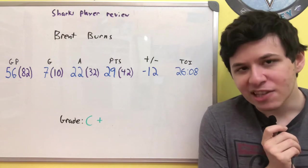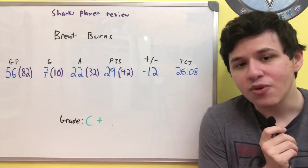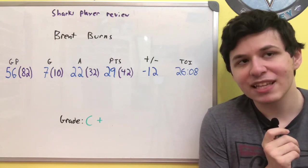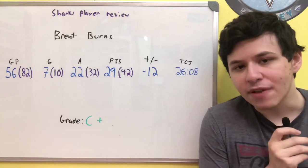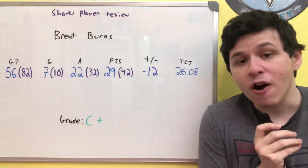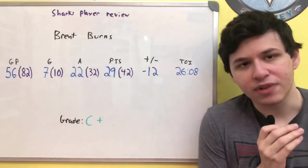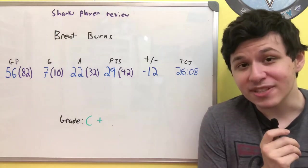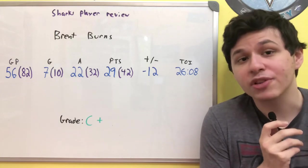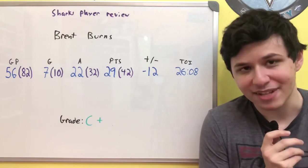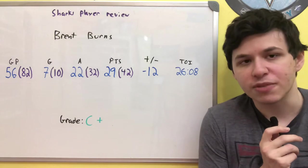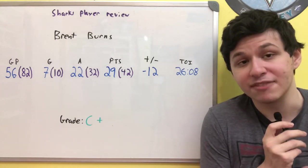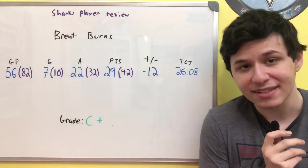So one stat that we can look at is the offensive zone start percentage. Basically, what percentage of the face-offs that you come on the ice for are in the offensive zone compared to the neutral and defensive zones. Now this season for Brent Burns, considering he has now taken on the role as the top not only offensive guy but defensive guy for the San Jose Sharks, just due to Justin Braun departing a couple of years ago and the massive decline of Marc-Édouard Vlasic.